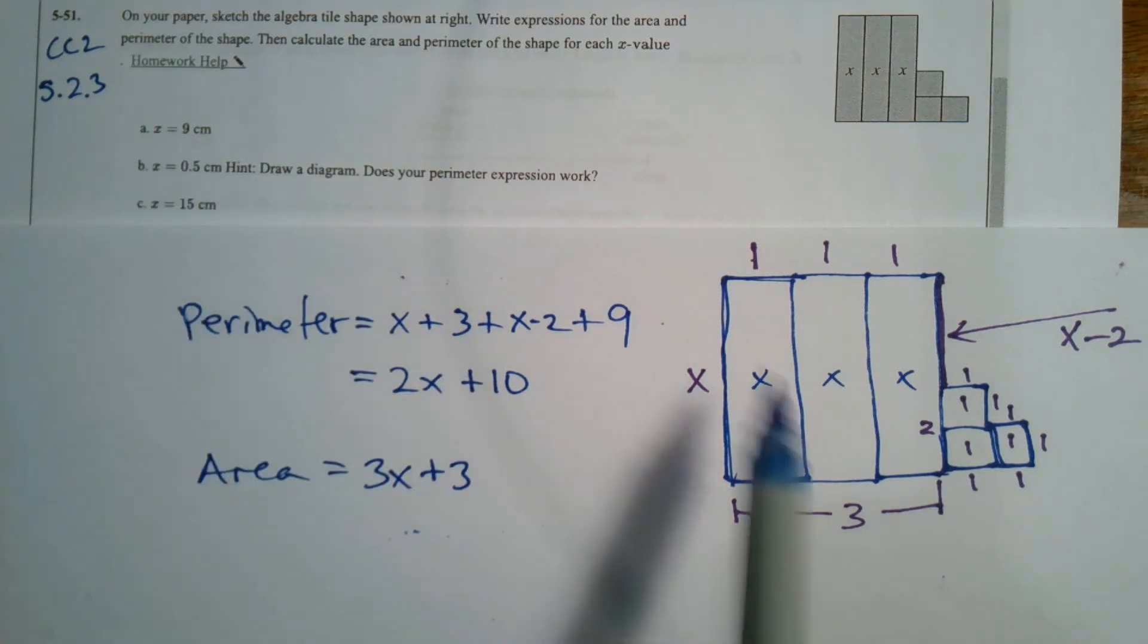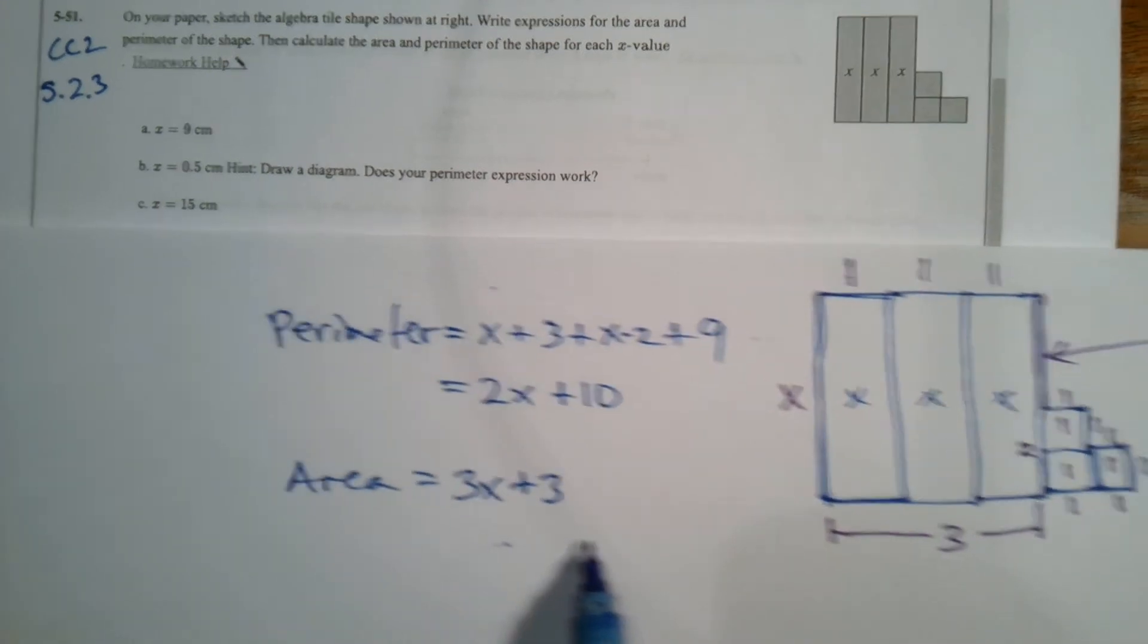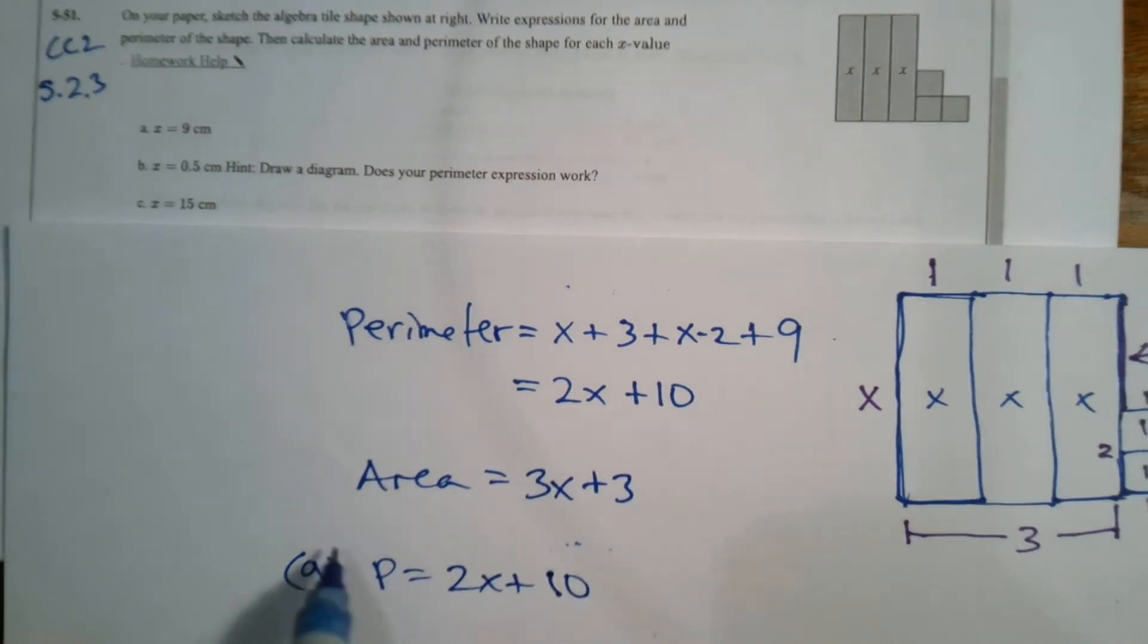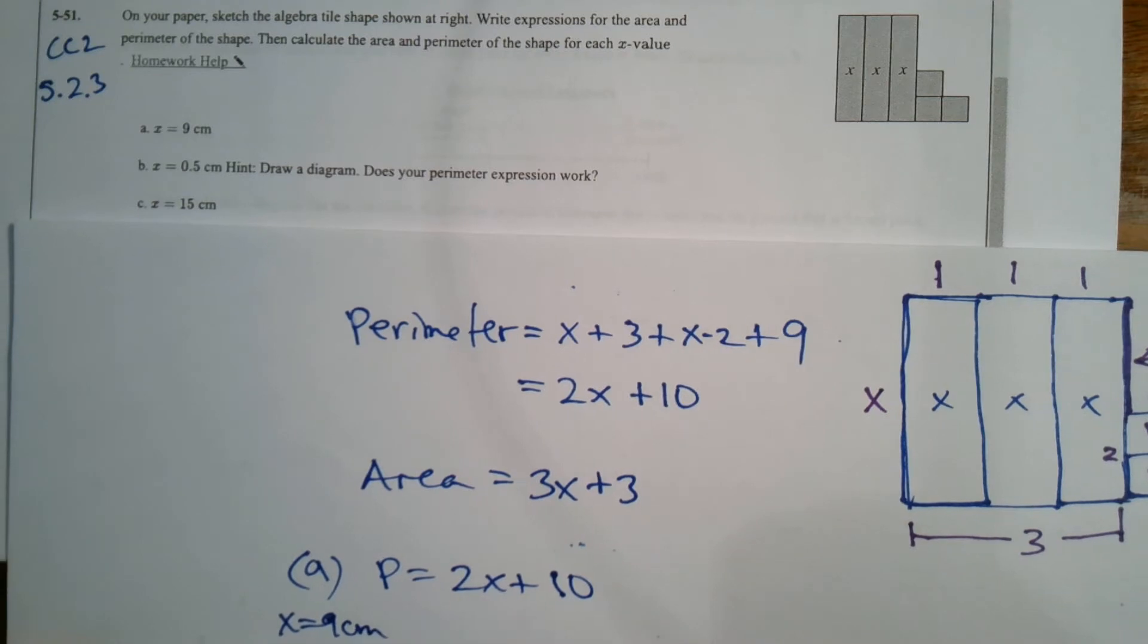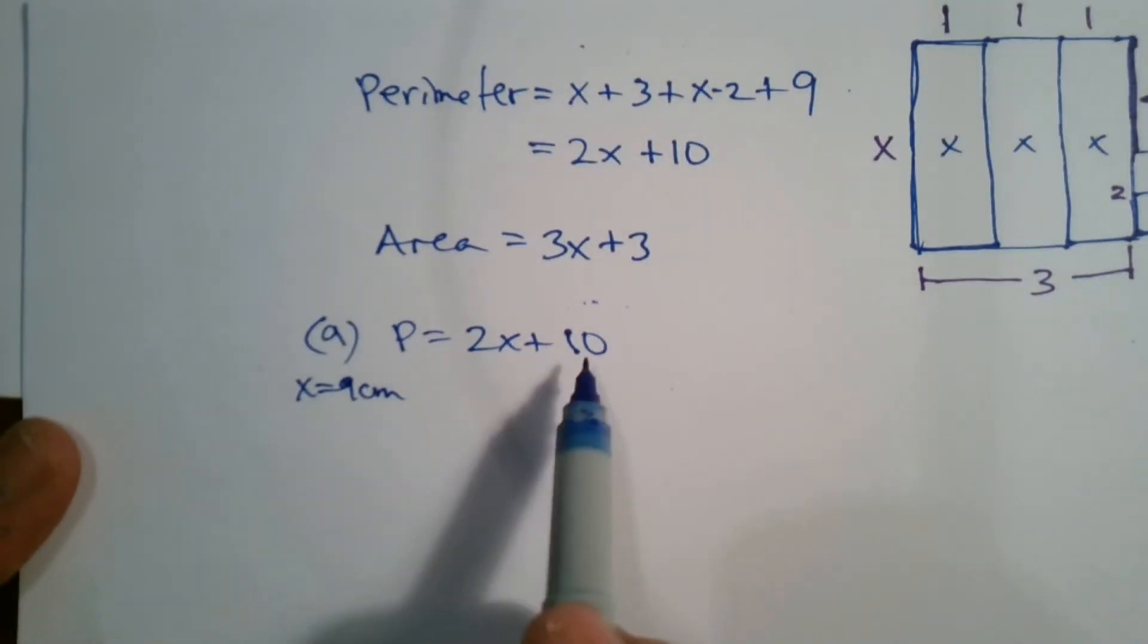So I can actually put that nine in here and do the math within the figure, or I can do the math within my expressions. So for A, I have my perimeter is equal to 2X plus 10. But what they want me to do for A is use X equals nine centimeters.